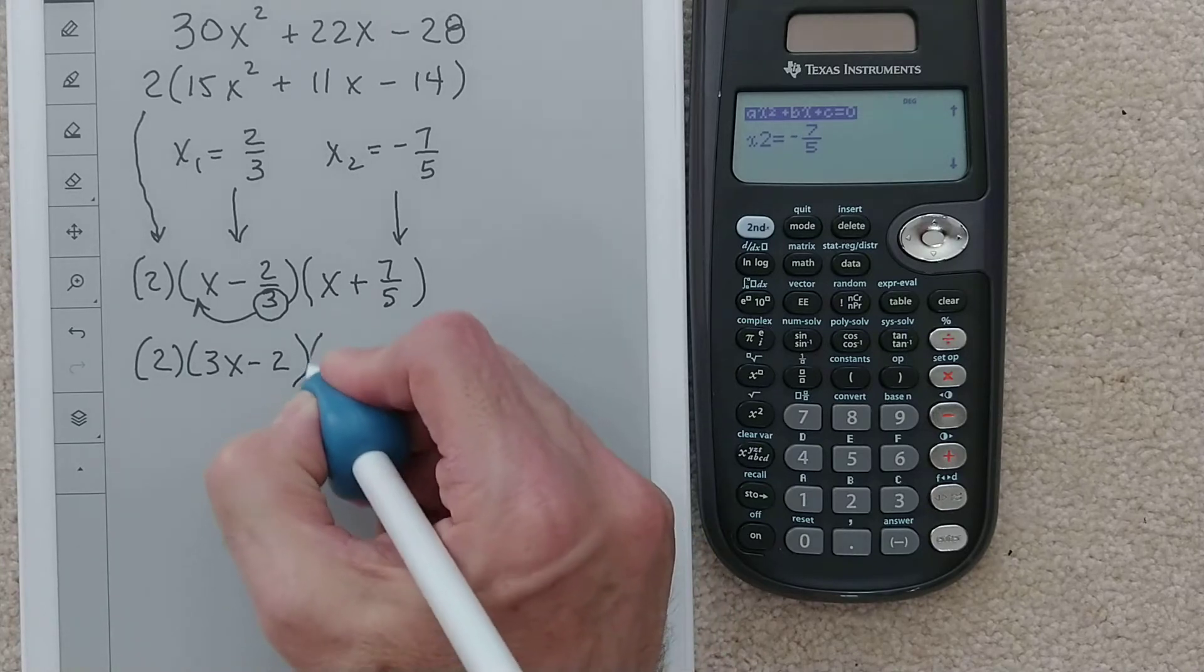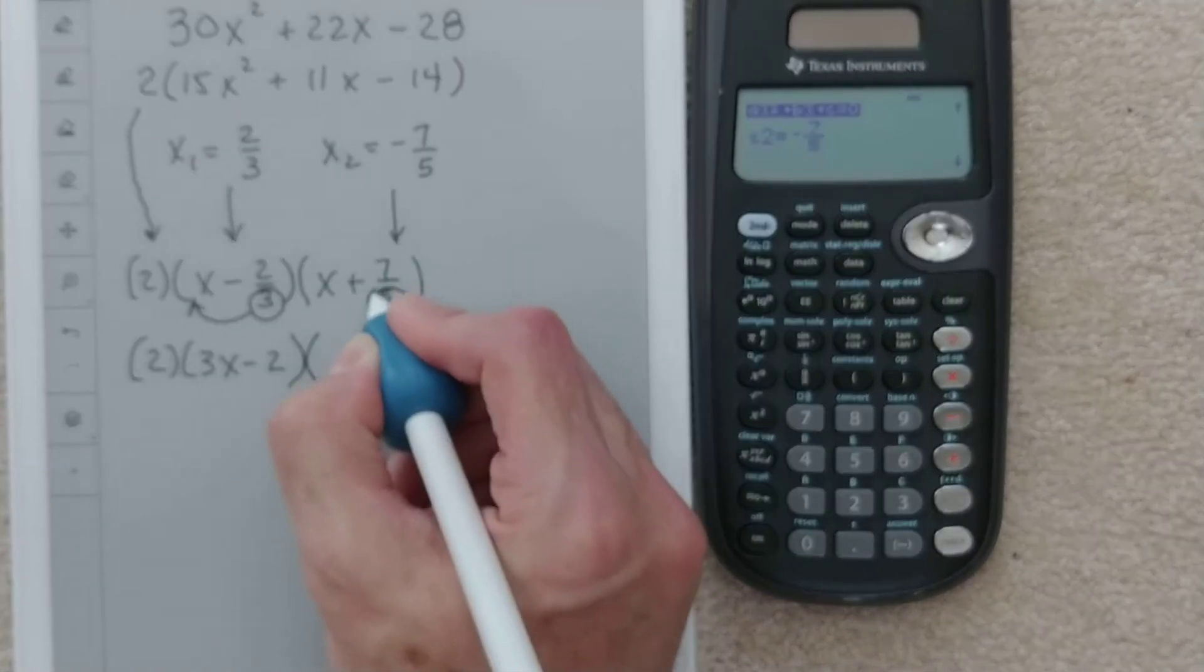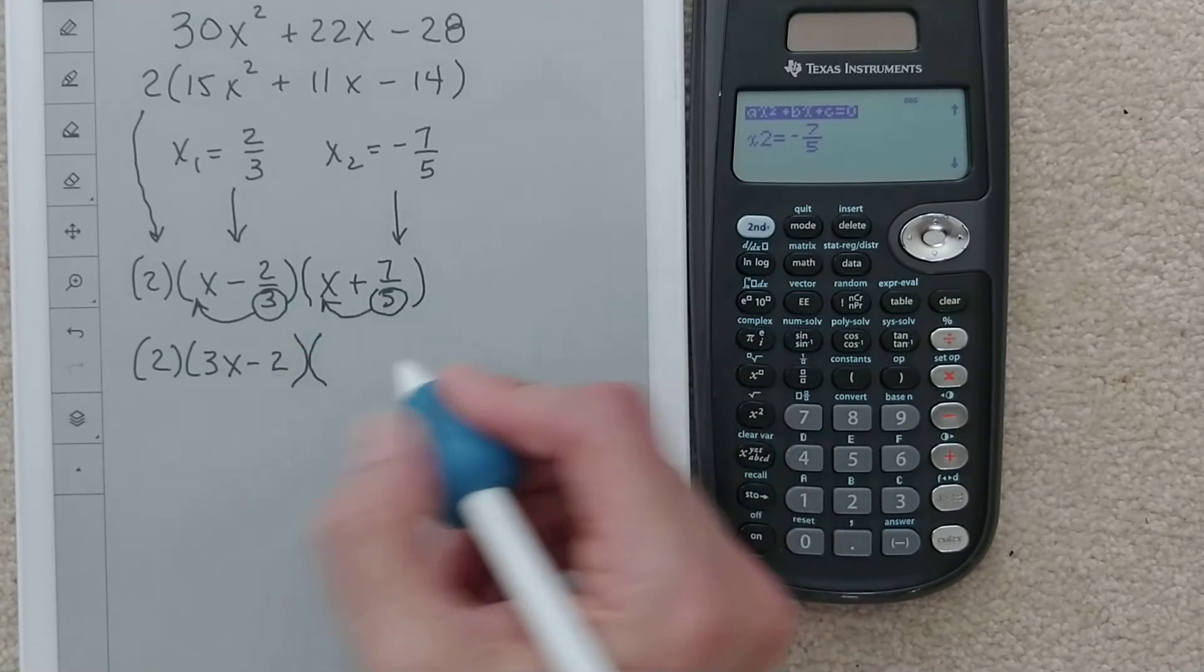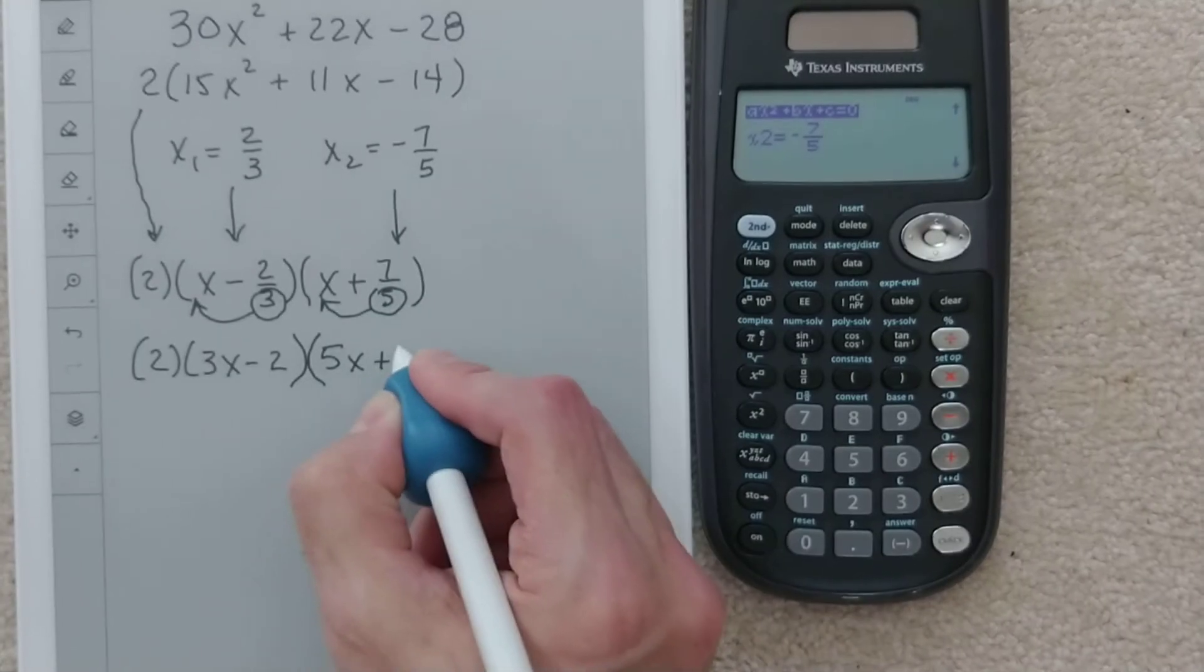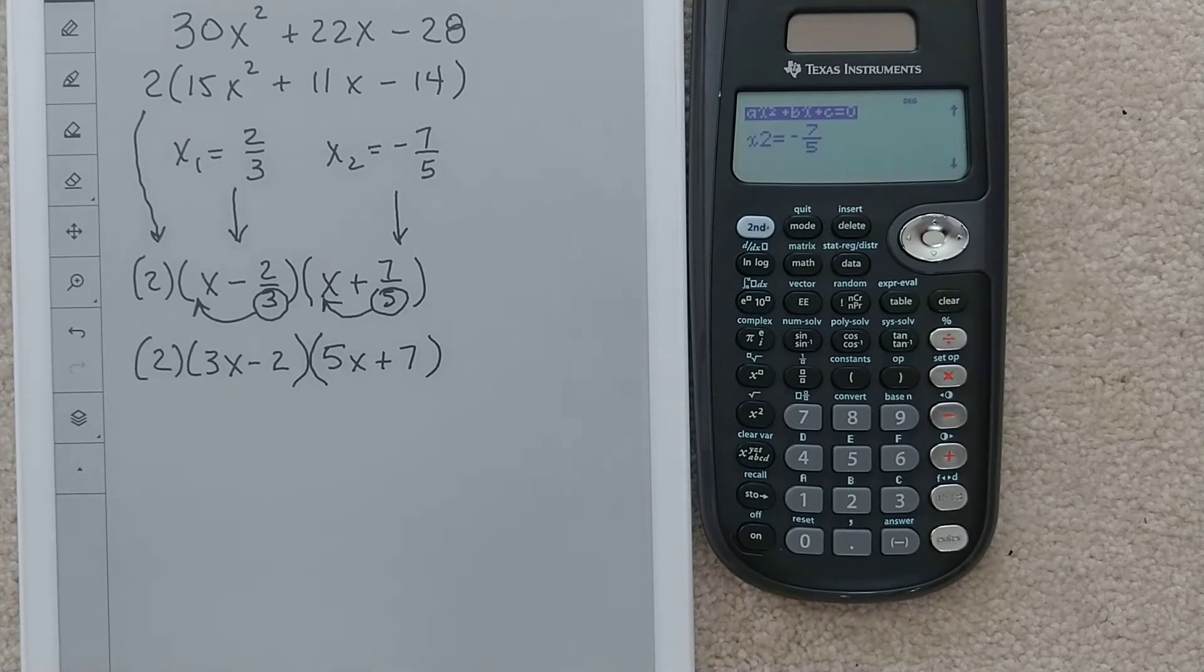Here we're going to do the same thing. We're going to take this 5 and move it out front, so we have 5x plus 7. I have now factored that bad boy.